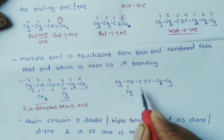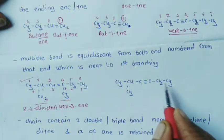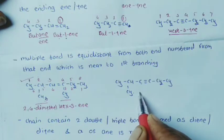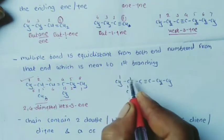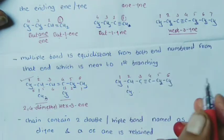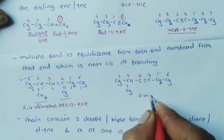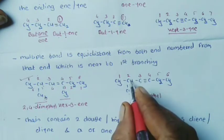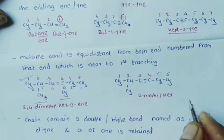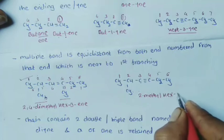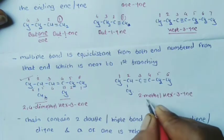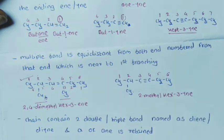Next example: CH3-CH(CH3)-C≡C-CH2-CH3 with one alkyl substituent. Numbering starts from the end nearest to the substituent: 1, 2, 3, 4, 5, 6. The methyl group is at carbon 2, and the triple bond starts at carbon 3. The IUPAC name is 2-methylhex-3-yne.